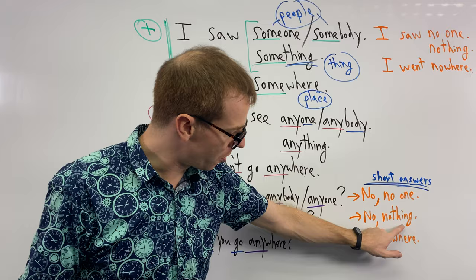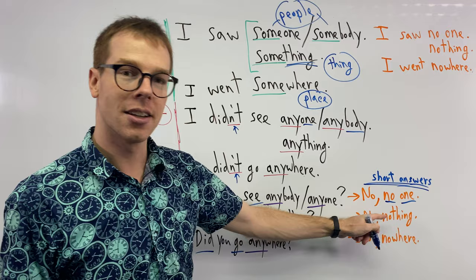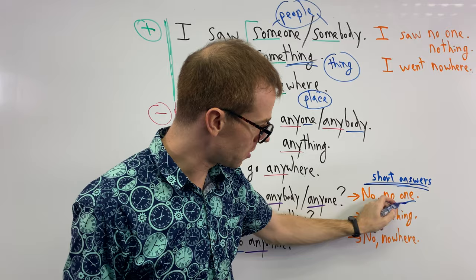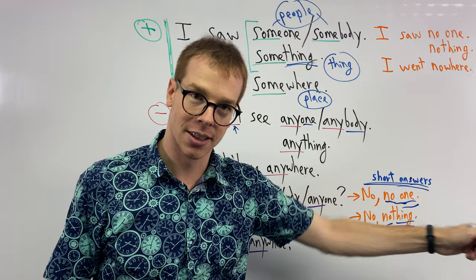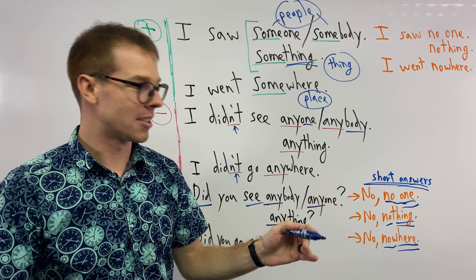Our no one. If we see no one, oh, remember, someone, anyone. This short answer, we can say, no people, we can say no one. Same thing, something, anything. Here, no thing, right? But we say nothing. And last, our where, nowhere, no place, nowhere.